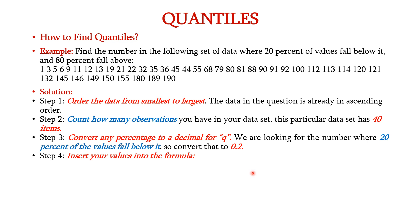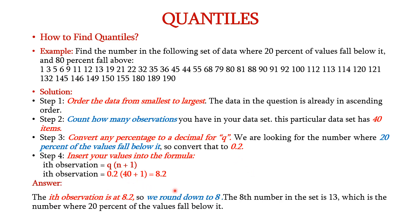Next, insert these values into the formula: ith observation is equal to q into n plus 1. So q is 0.2 and n is 40, giving 0.2 into 41 equal to 8.2. Rounding off 8.2 we get 8. So the eighth number in the data is 13. Thus 20 percent of the total data falls below this eighth number and the remaining 80 percent is above it. This is what quantiles represent.